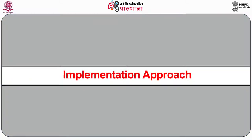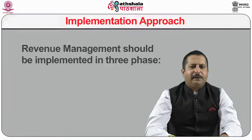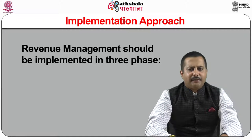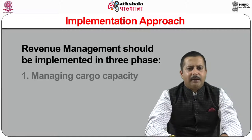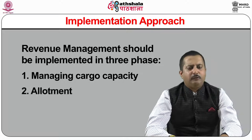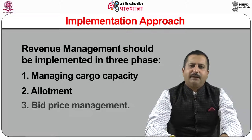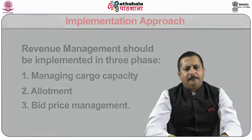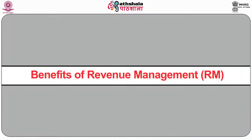Implementation approach: revenue management should be implemented in three phases — first, managing cargo capacity; second, allotment; and third, bid price management.